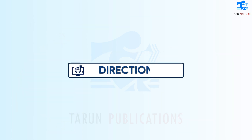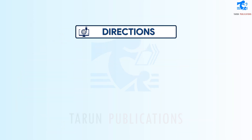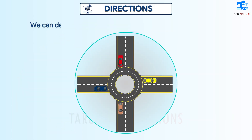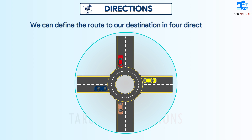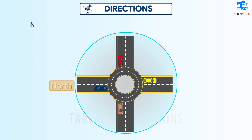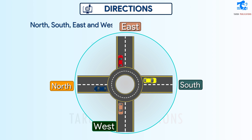Directions. We can define the route to our destination in four directions: north, south, east, and west. These directions help to find a location very easily.